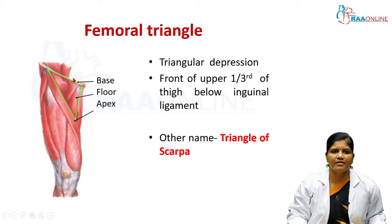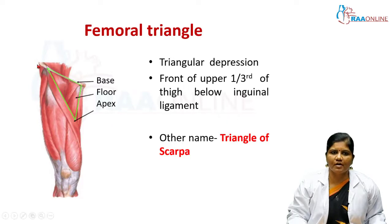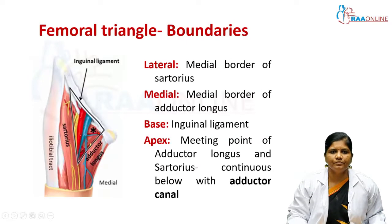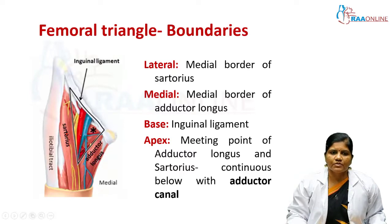The femoral triangle is a triangular depression seen in the front of the upper one-third of the thigh, just below the inguinal ligament. The other name of the femoral triangle is the triangle of Scarpa. The base of the triangle is located above, formed by the inguinal ligament, and the apex is directed below. The lateral boundary is formed by the medial border of the sartorius muscle, which runs from the anterior superior iliac spine to the tibia.